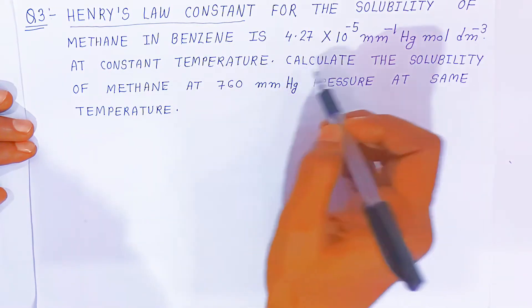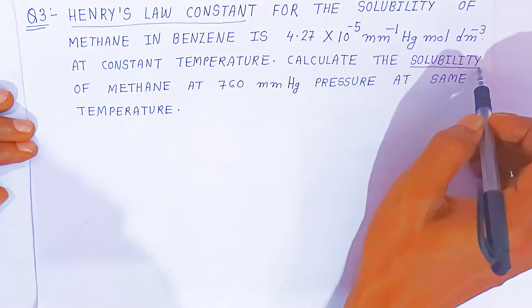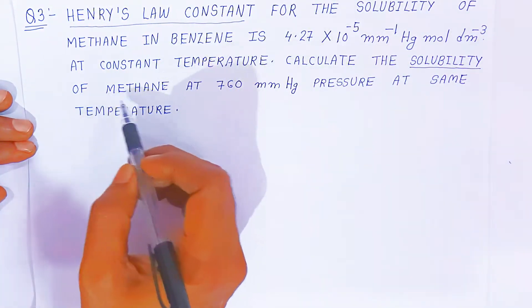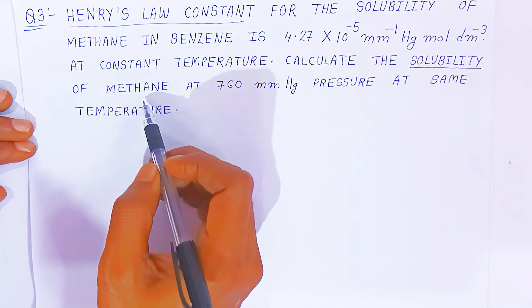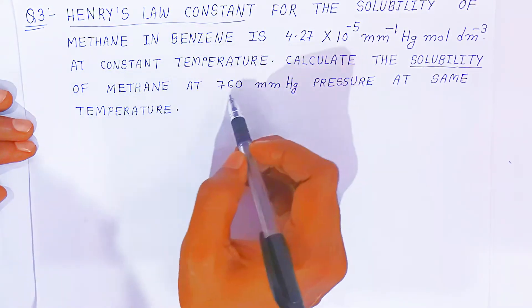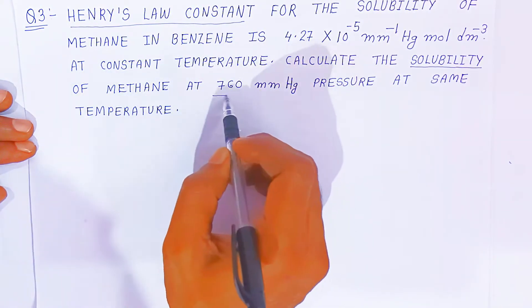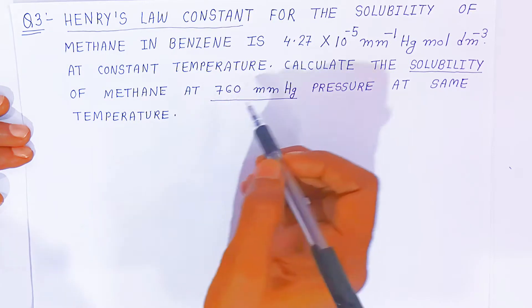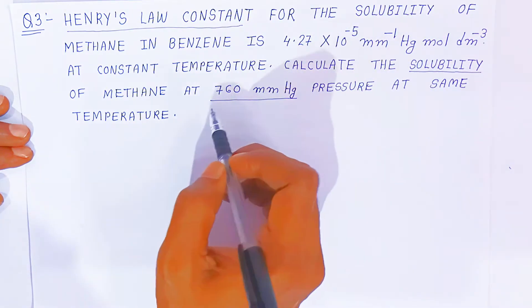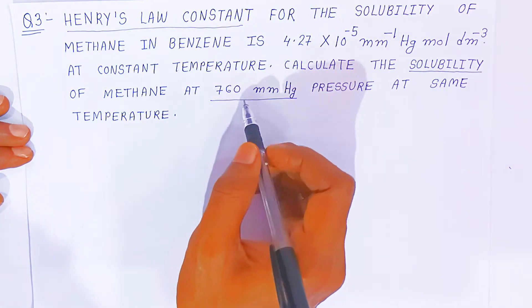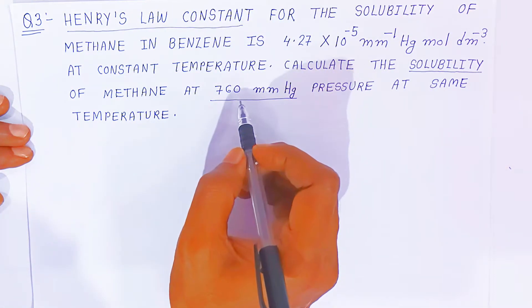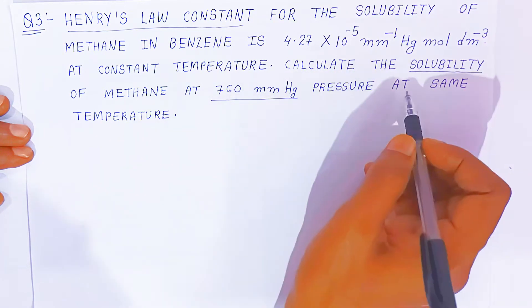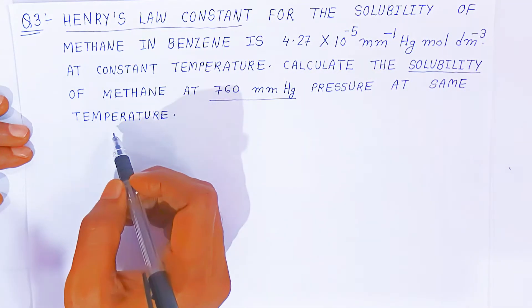You have to calculate the solubility S of methane gas at 760 mm mercury. The solubility you are going to calculate when the pressure is 760 mm mercury, at the same temperature.